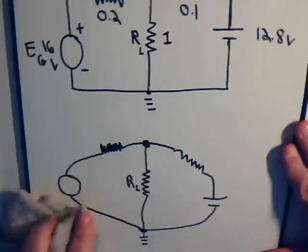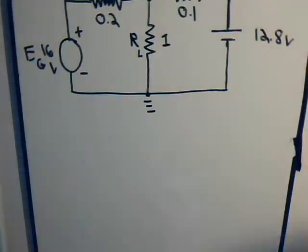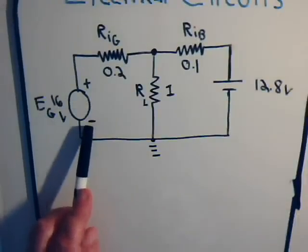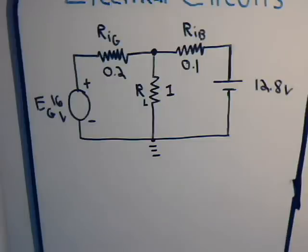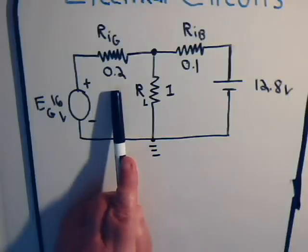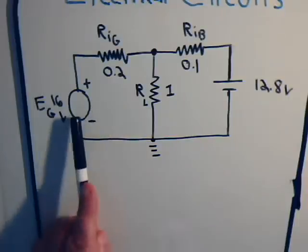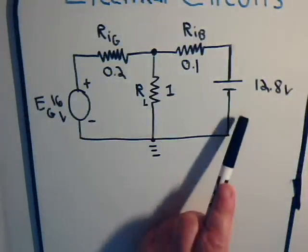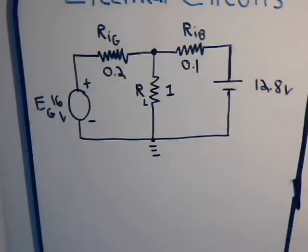This is a generator that puts out 16 volts with this polarity, and here we have a battery. For example, this could be a circuit in a car where you have both a battery and a generator as voltage sources, and this two-tenths of an ohm could be the internal resistance of the battery.